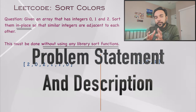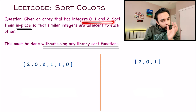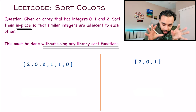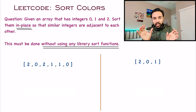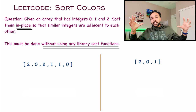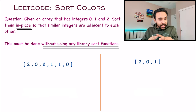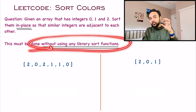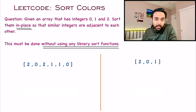Let me try to simplify the problem statement for you. In this problem, you are given an array that has the integers 0, 1, and 2. All of these integers are representing colors: 0 represents red, 1 represents white, and 2 represents blue. You have to group all the adjacent integers together such that all the zeros are together, all the ones are together, and all the twos are together — essentially sorting the array.